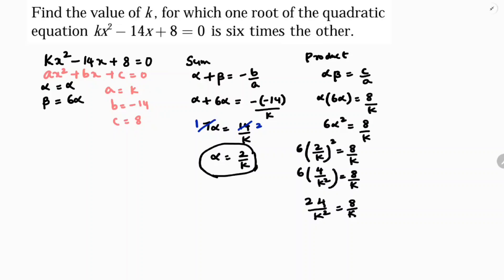If I cross multiply: 24k = 8k². So 8k² - 24k = 0.